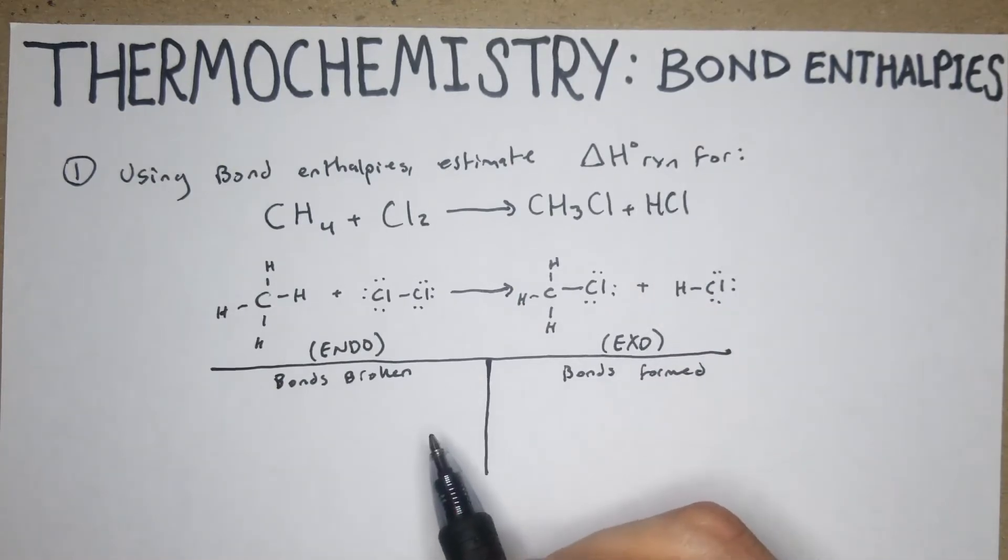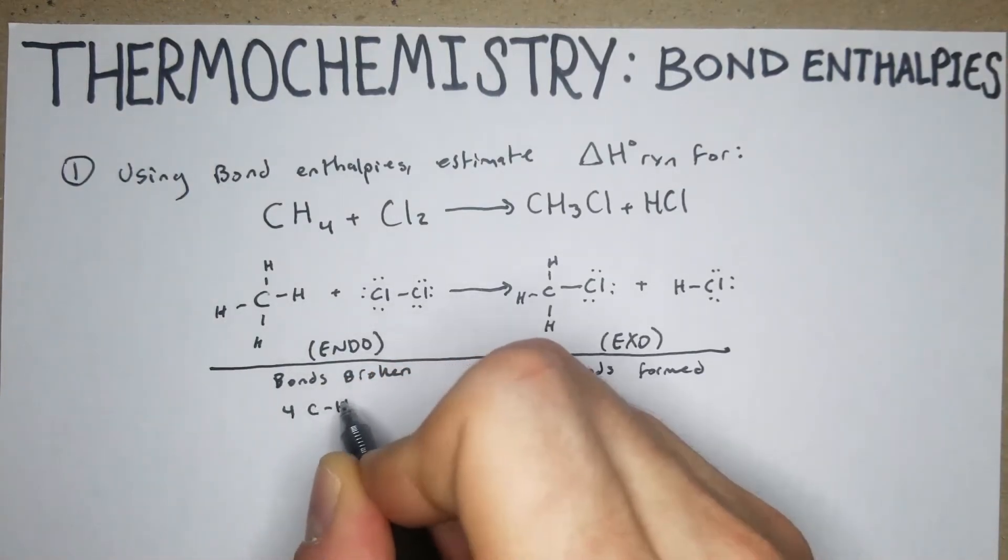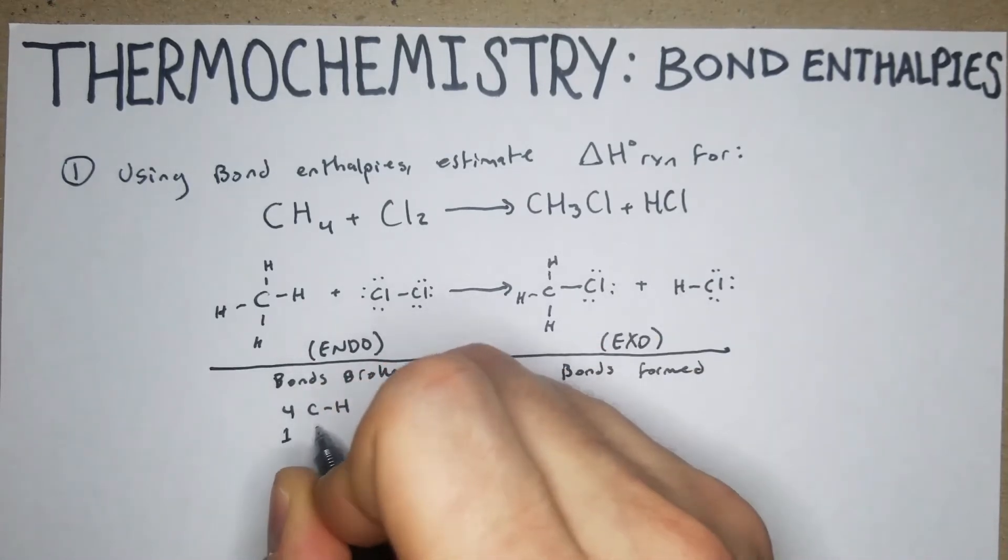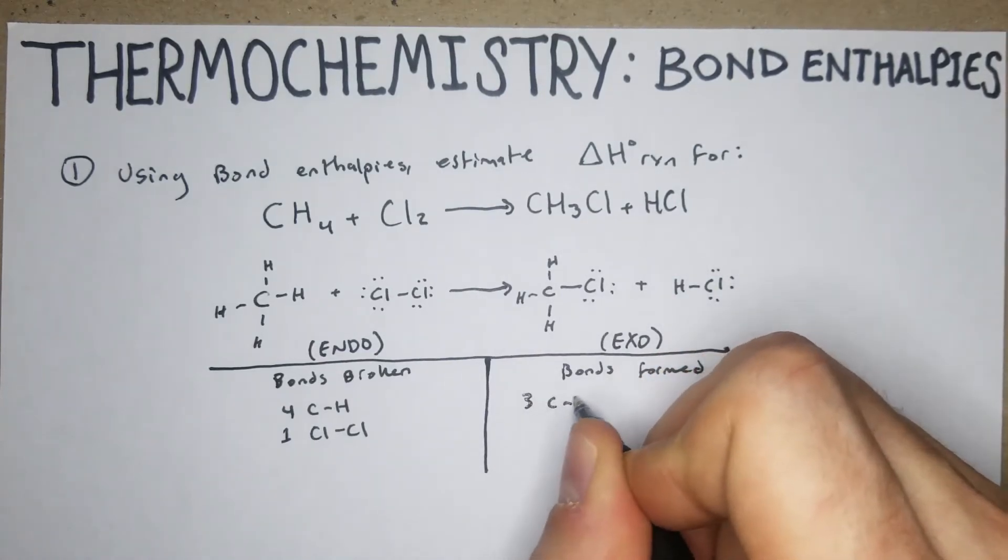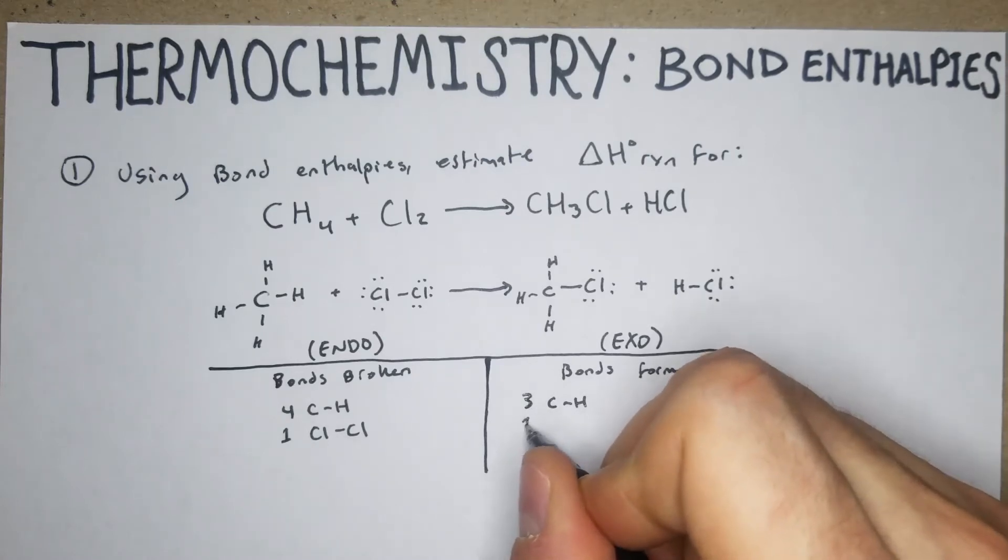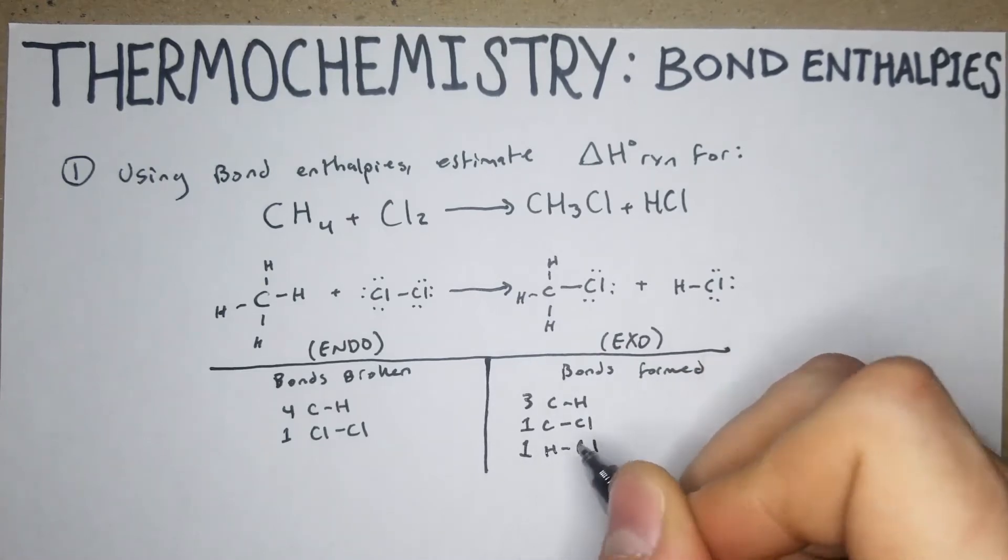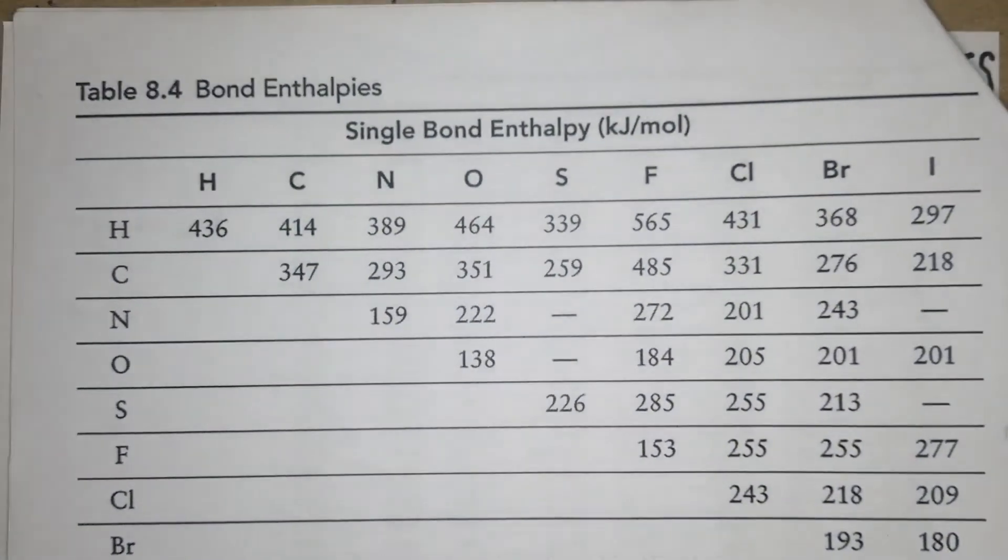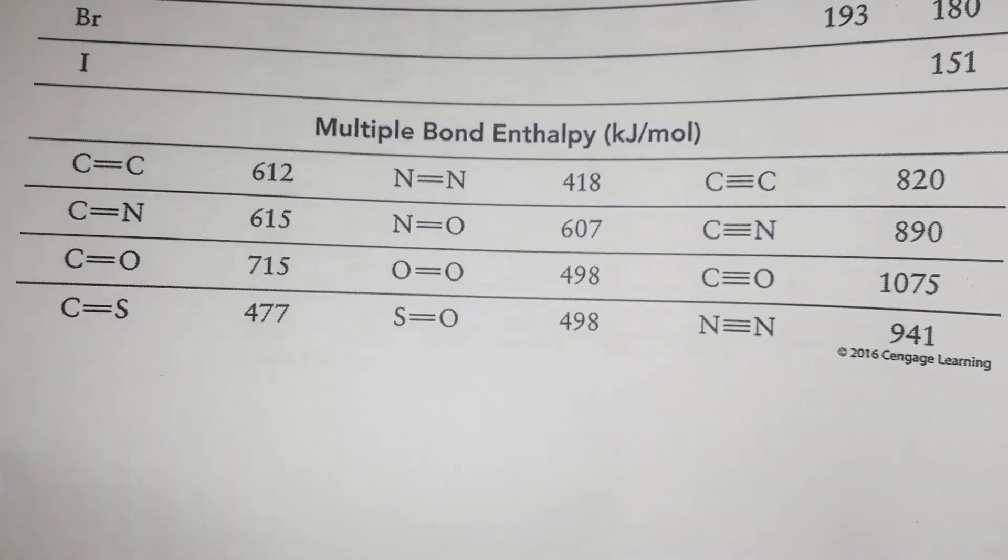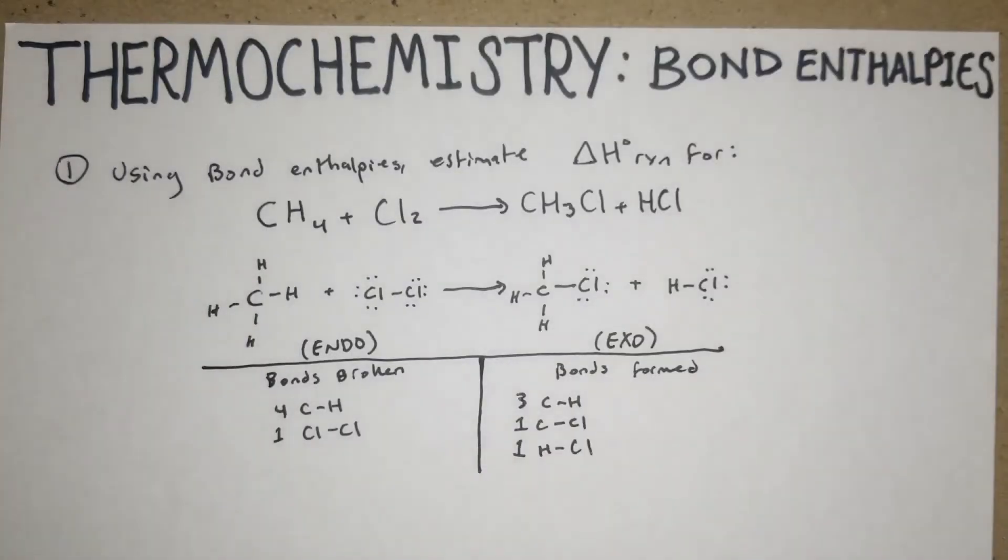In this case I like to count out the bonds. So we have one, two, three, four CH bonds, and then we have one Cl-Cl bond. Now on this side we have three CH, we have one C-Cl and one H-Cl. In these cases you're going to get some kind of chart with a bunch of the values for multiple bonds, and usually you should be supplied something like this.